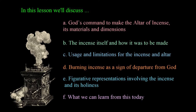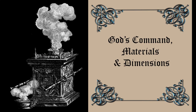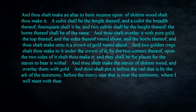God commanded Moses: 'Thou shalt make an altar to burn incense upon of shittim wood shalt thou make it. A cubit shall be the length thereof and a cubit the breadth thereof — four square shall it be — and two cubits shall be the height thereof. The horns thereof shall be of the same, and thou shalt overlay it with pure gold: the top thereof and the sides thereof round about and the horns thereof. And thou shalt make unto it a crown of gold round about, and two golden rings shalt thou make to it under the crown of it, by the two corners thereof upon the two sides of it, and they shall be for places for the staves to bear it with all. And thou shalt make the staves of shittim wood and overlay them with gold.'